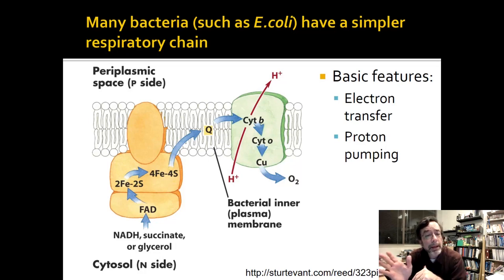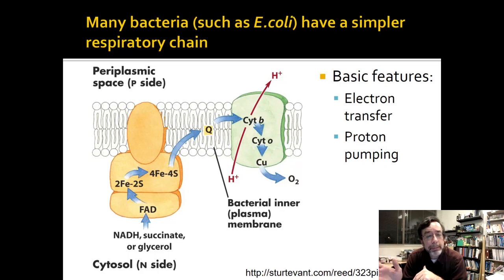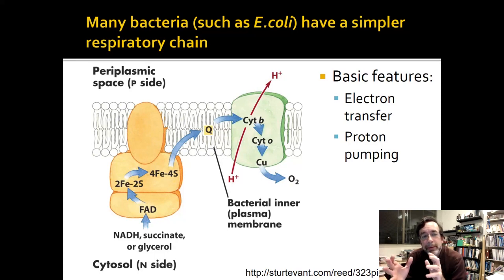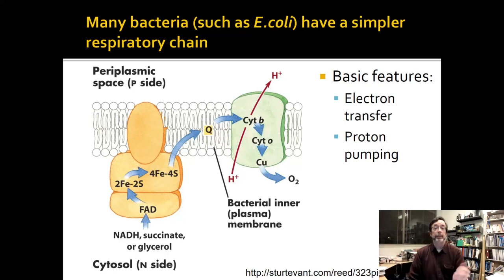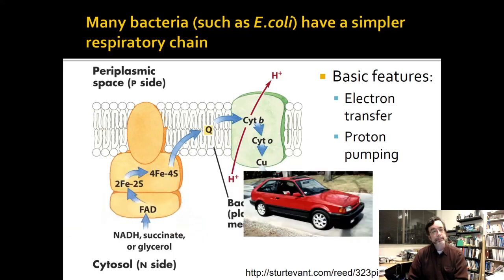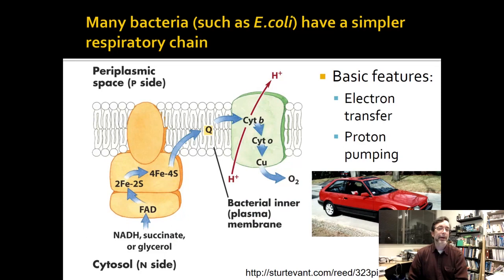It just produces Q. But the Q goes to a complex IV version that crosses the membrane, is able to pump protons, and is able to pass the electrons to oxygen. So you see how this is slightly more complex than the simpler version, just because you have a complex IV that can actually do its job — it can actually pump protons. Not terribly efficient, but it works. It's kind of like the compact car version.